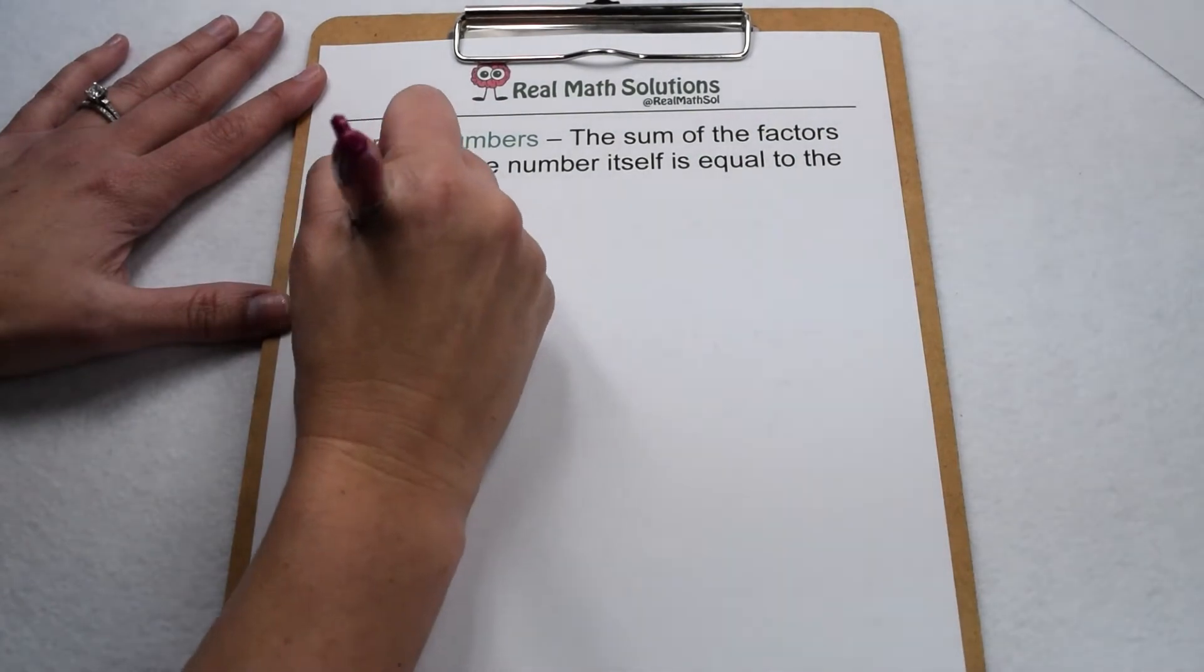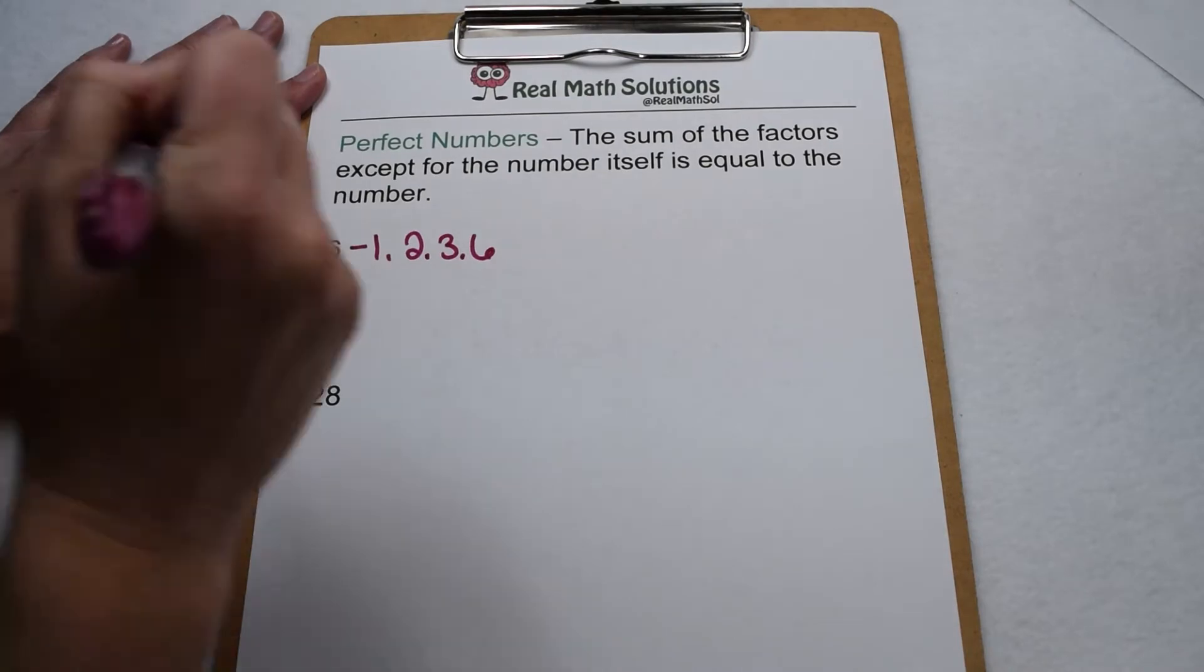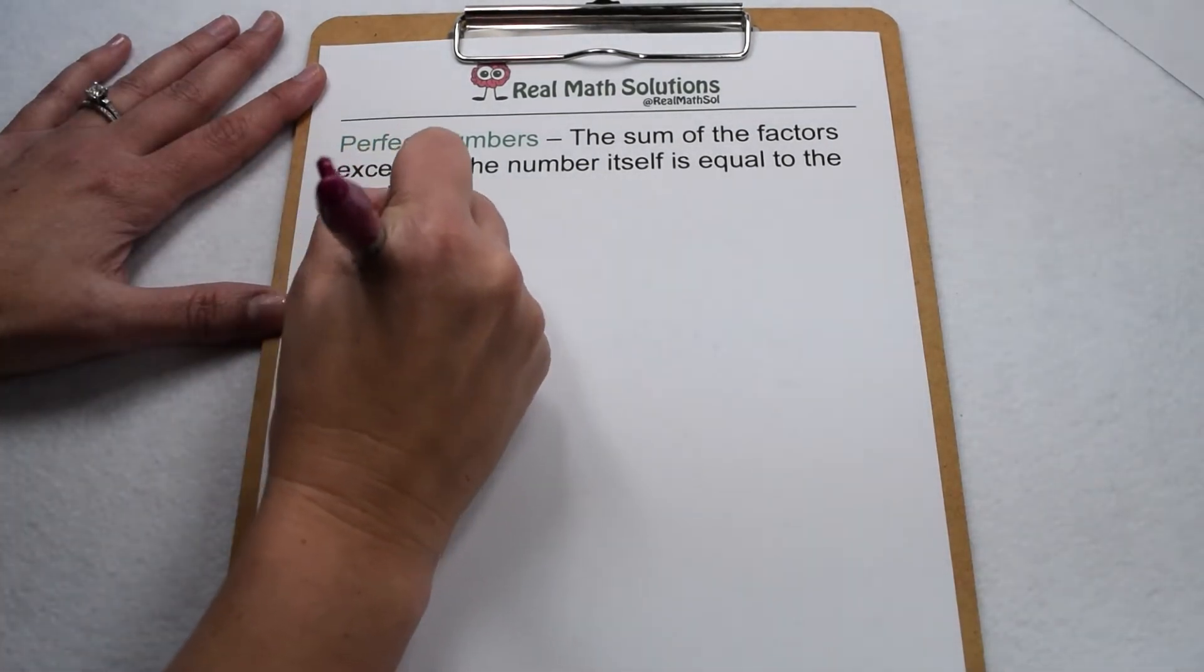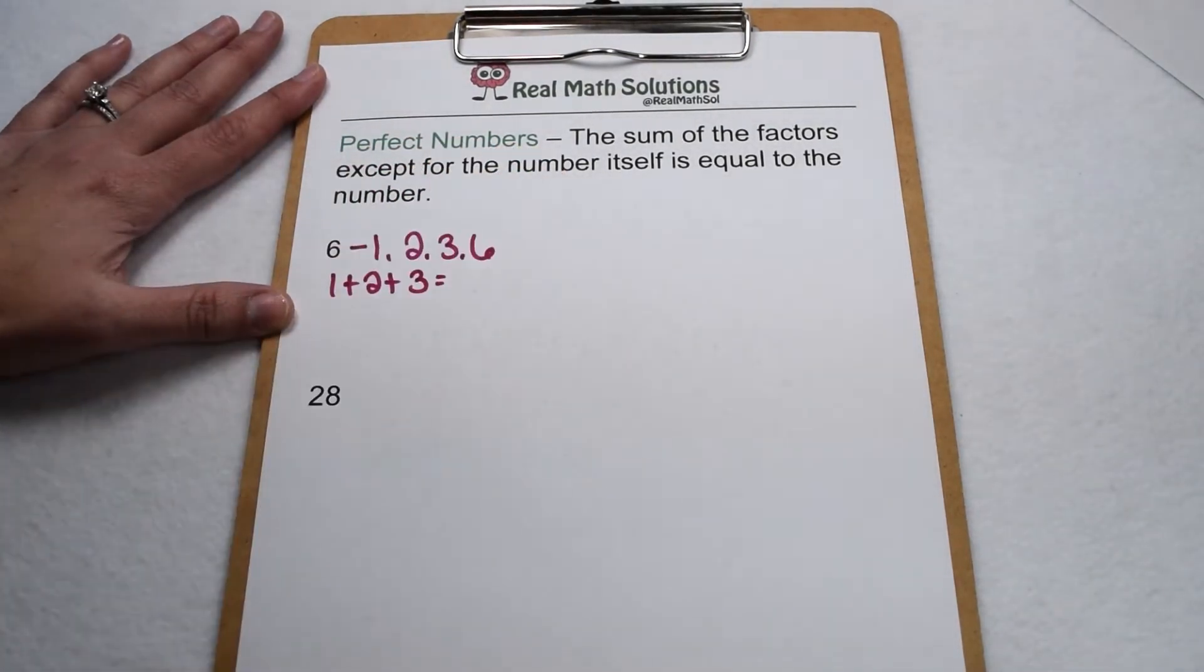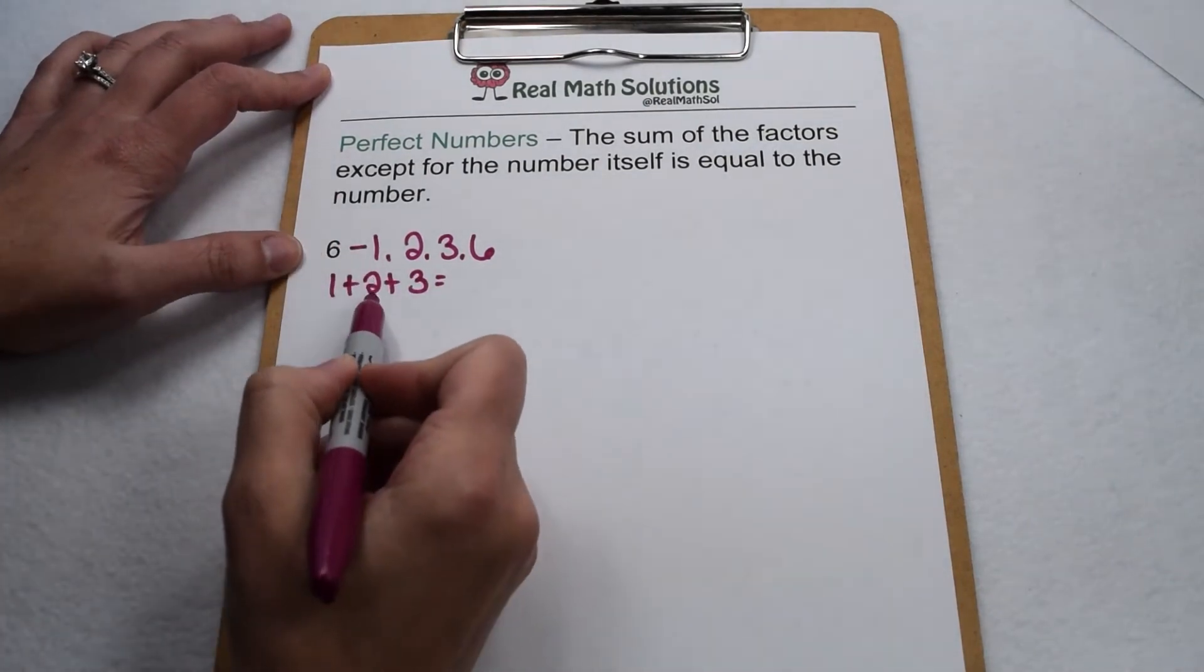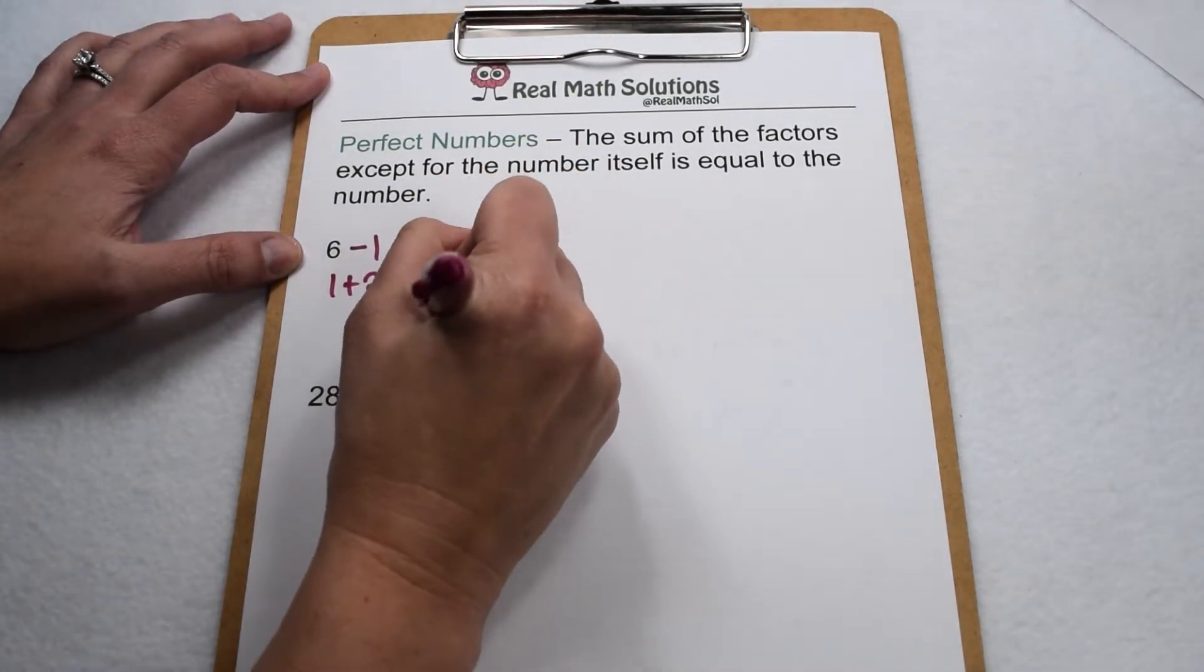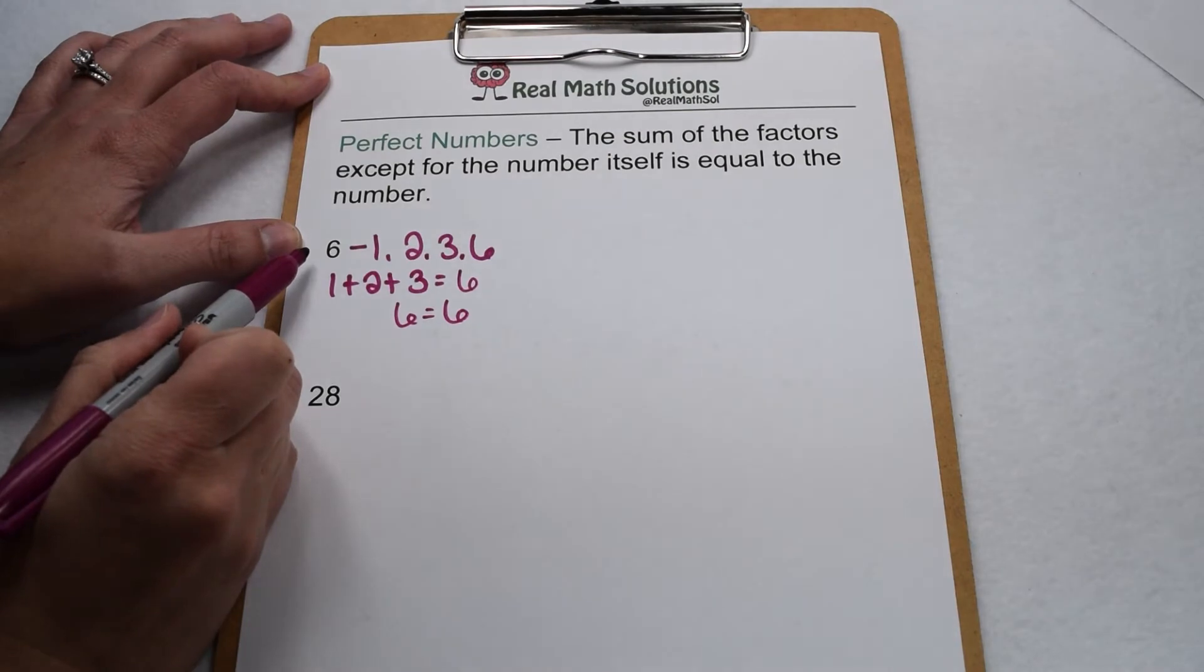Let's start by listing our factors of 6. Factors of 6 include 1, 2, 3, and 6. If it's perfect, that means we can add together all of the factors except the number itself and come out with 6 again. So we would add together the 1 plus the 2 plus the 3. 1 plus 2 is 3. 3 plus 3 is 6. Well, 6 does equal 6, so indeed, 6 is a perfect number.